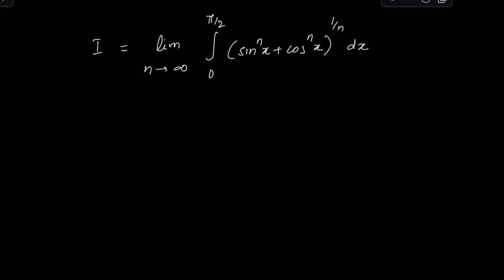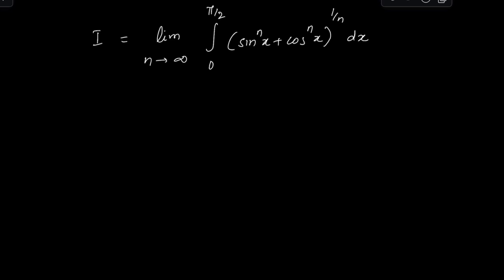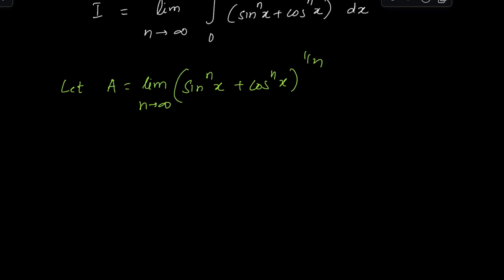Let's look at this integration today. It involves the integral of (sin^n(x) + cos^n(x))^(1/n) from zero to π/2, where n is a very large number. To solve this, let's call the expression inside A, so let A = (sin^n(x) + cos^n(x))^(1/n), where n is a very large quantity.